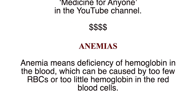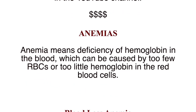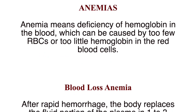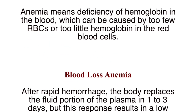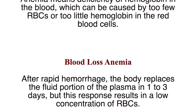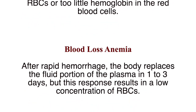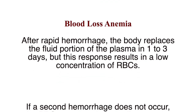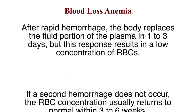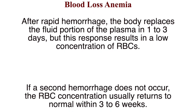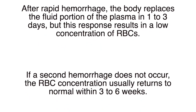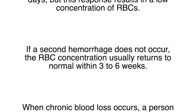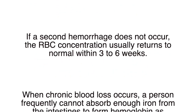Blood loss anemia: After rapid hemorrhage, the body replaces the fluid portion of the plasma in 1-3 days, but this response results in a low concentration of RBCs. If a second hemorrhage does not occur, the RBC concentration usually returns to normal within 3-6 weeks.